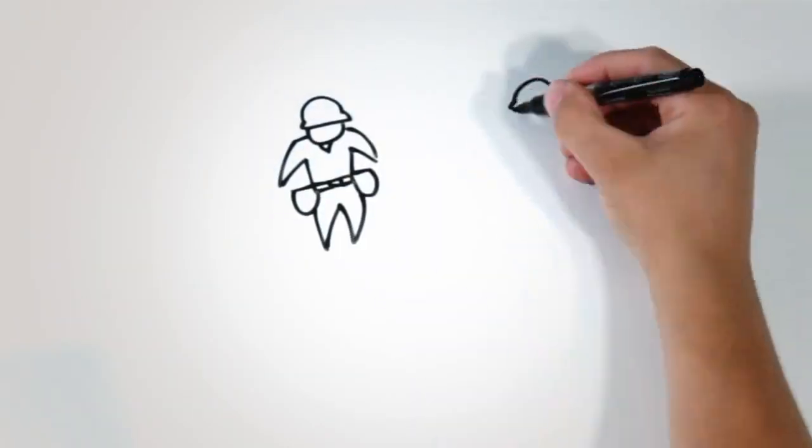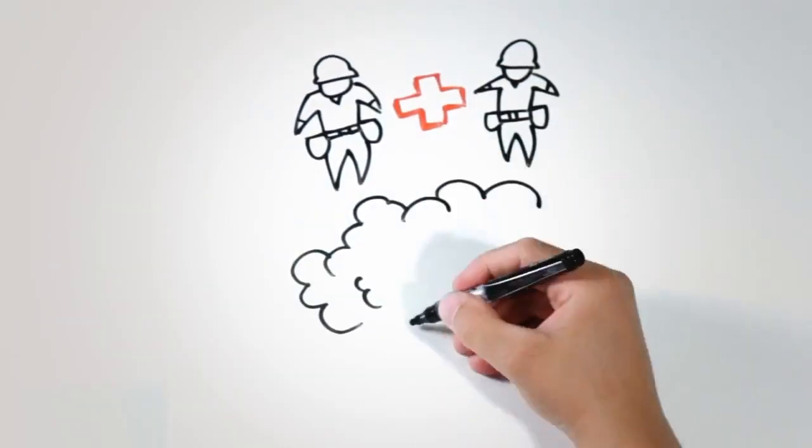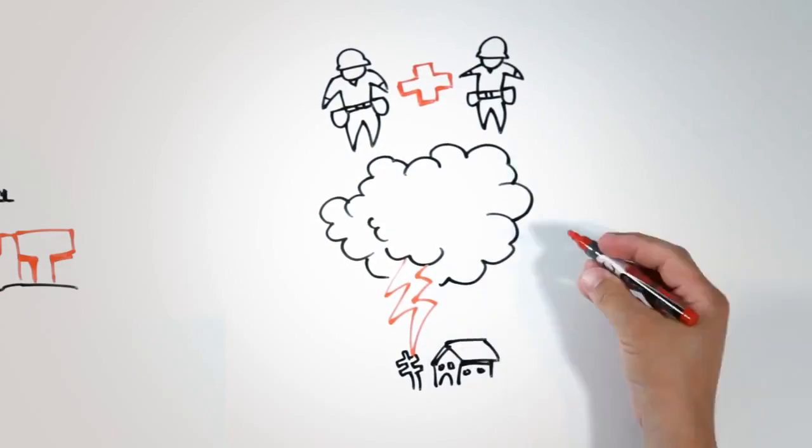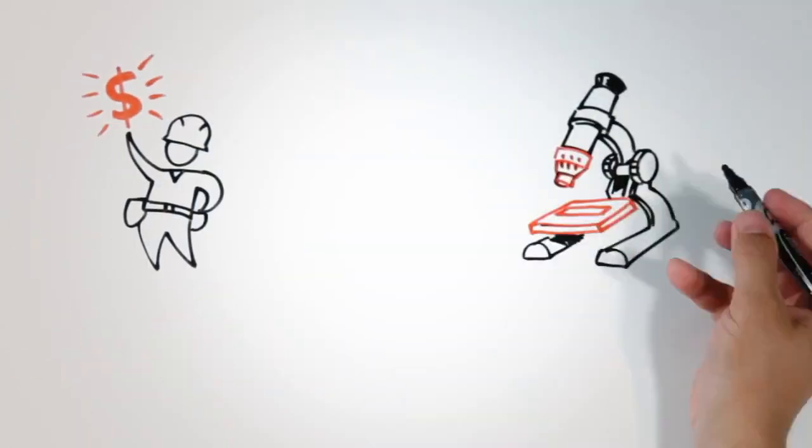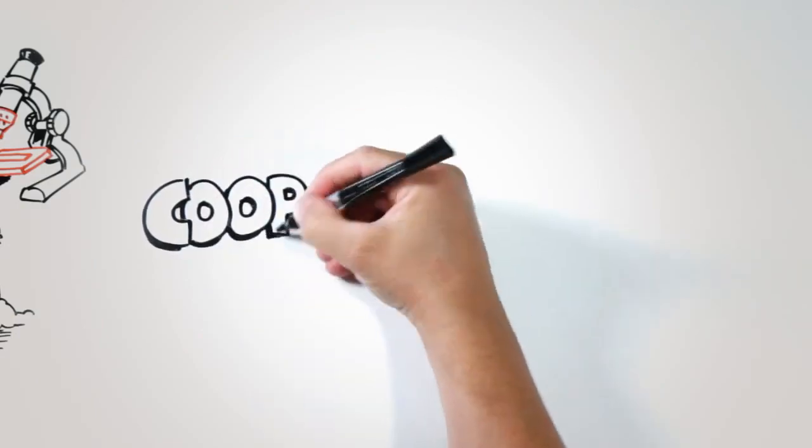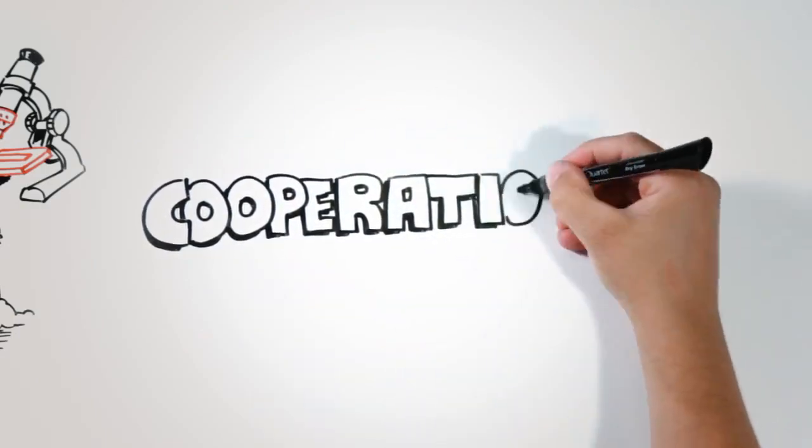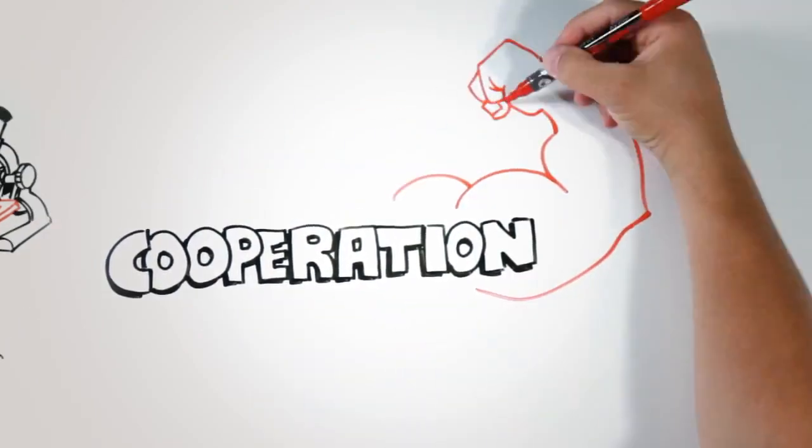But cooperatives also work together. They join forces to restore outages after storms, get financing, do research and speak up in the halls of government. We call this hallowed principle cooperation among cooperatives. It's what makes us strong.